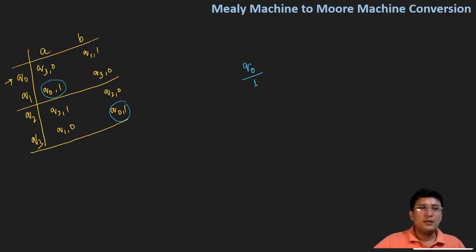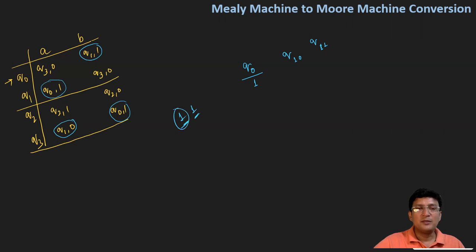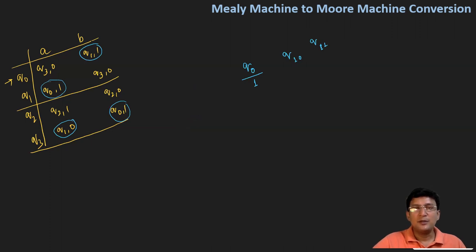Now with q1, you can see that it is having one output in one case and zero output in another. This means there will be two different states for q1 when we convert to the Moore machine. One state is q10, which produces the output zero, and another state is q11 that produces the output one. The first subscript tells the state number and the second subscript tells what output it produces. This is the splitting of q1 into two different states q10 and q11.